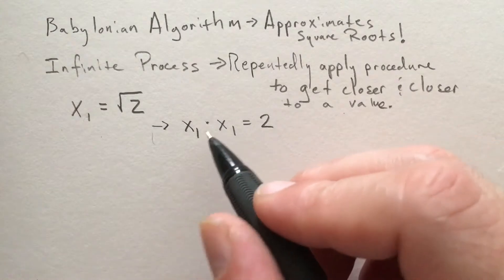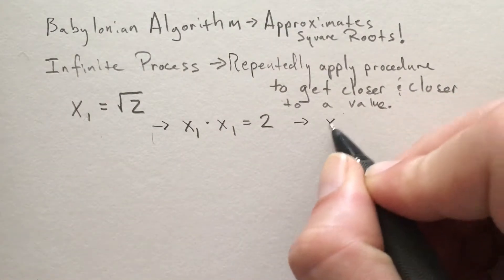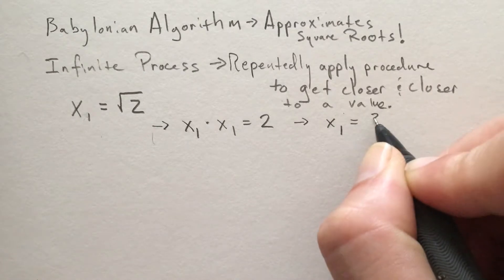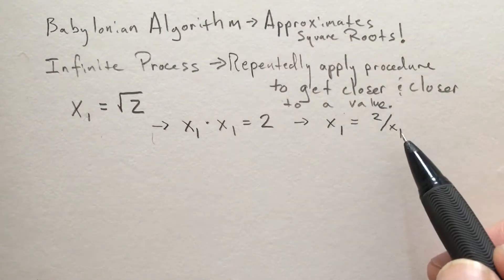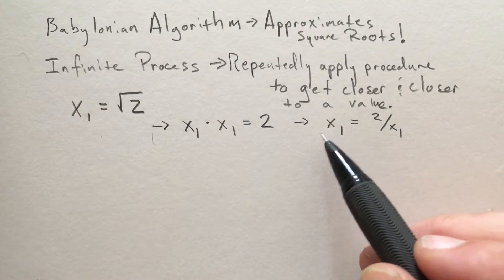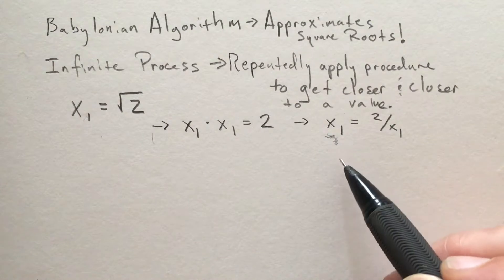Similarly, we can rearrange this equation to solve for just x₁, and we see that we can rewrite x₁ as 2 over x₁. Now, the whole idea here is that we don't know what x₁ is—that's what we're trying to figure out.